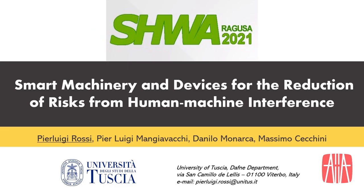The first Topic 7 paper is 'Smart Machinery and Devices for the Reduction of Risk for Human-Machine Interference' by Pierluigi Rossi, Pierluigi Manzabacchi, Danilo Monarca, and Massimo Cecchini, presented by video. I'm Pierluigi Rossi, Safety Engineer and PhD student at Tuscia University in Viterbo. Today I show highlights from our review article on smart solutions for reducing human-machine interference risks in agriculture. The simultaneous presence of autonomous agricultural vehicles and workers on foot can result in poor interaction between machines and operators.